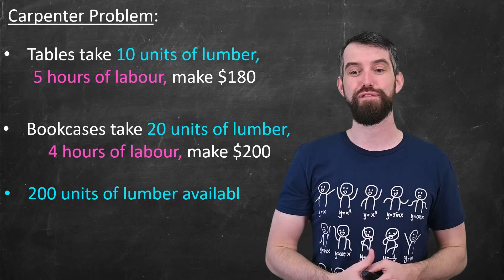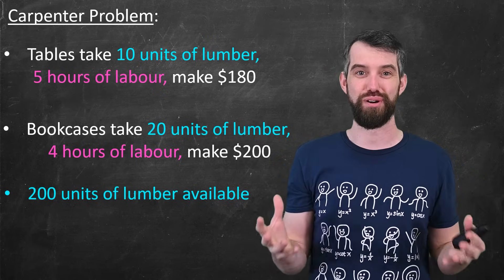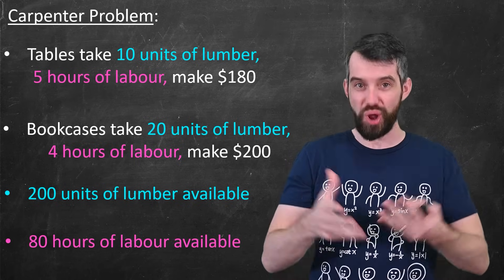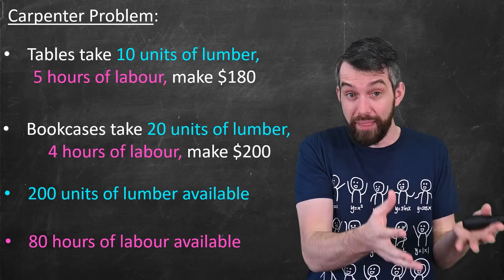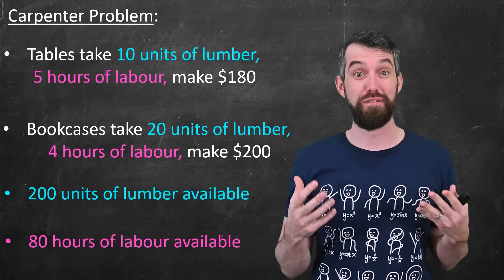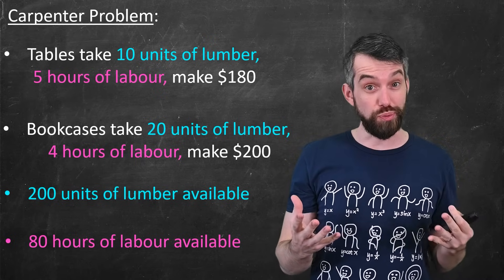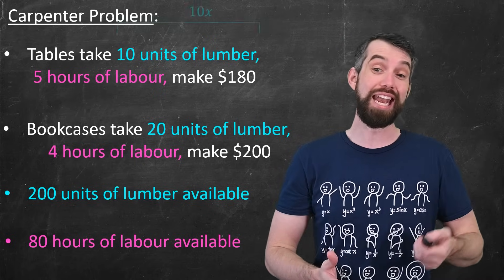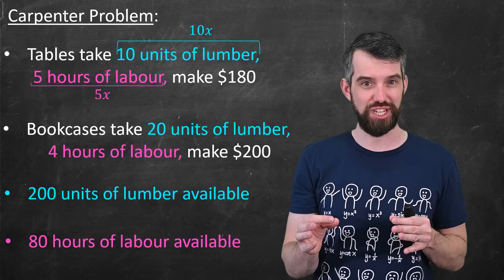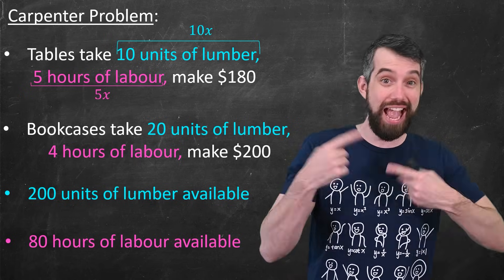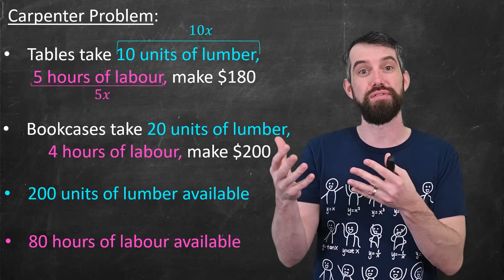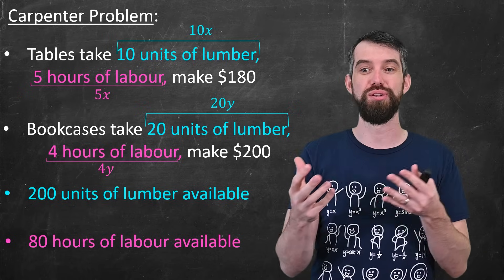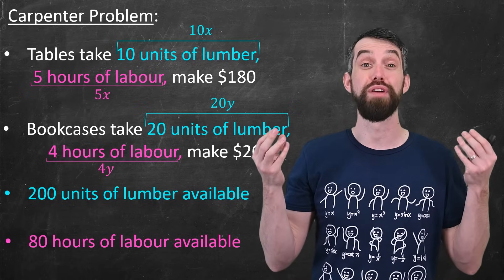There are a few other constraints. First, there are only 200 units of lumber available. And over two weeks, you want to work only 80 hours. So there's a constraint on the amount of wood and a constraint on the time. Let x denote the number of tables — making x tables uses 10x units of lumber and 5x hours of labor. Likewise, y denotes the number of bookcases, so 20y is the lumber used and 4y is the labor used.